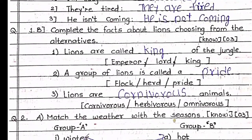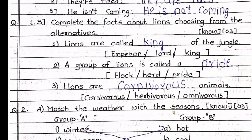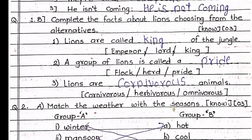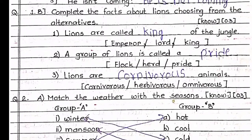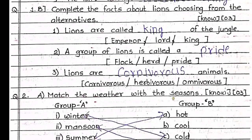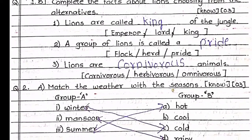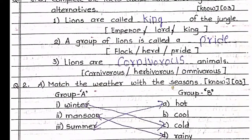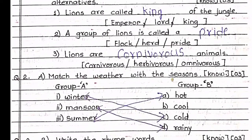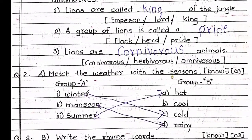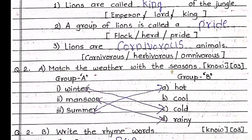Question 2A: Match the weather with the seasons. Group A and Group B. Winter — Cold. Monsoon — Rainy. Summer — Hot.